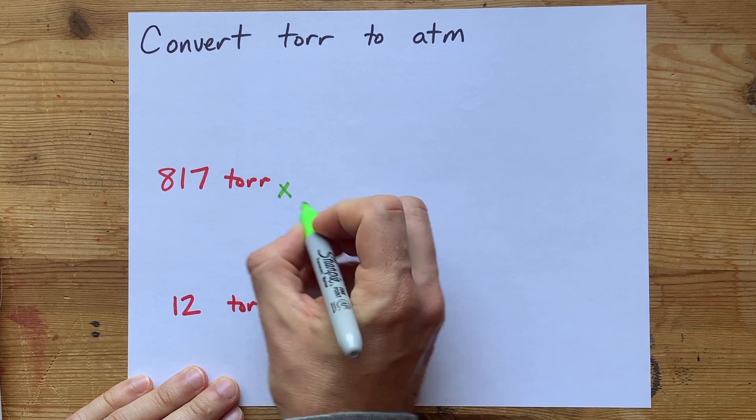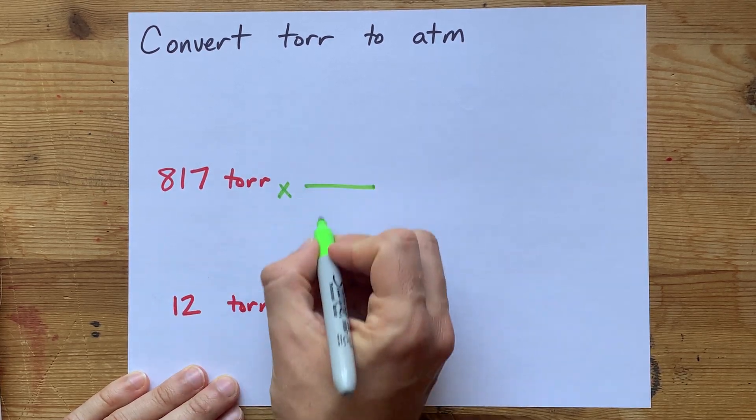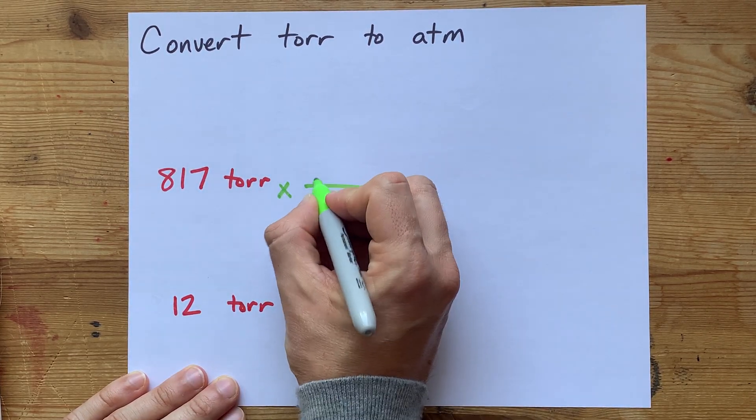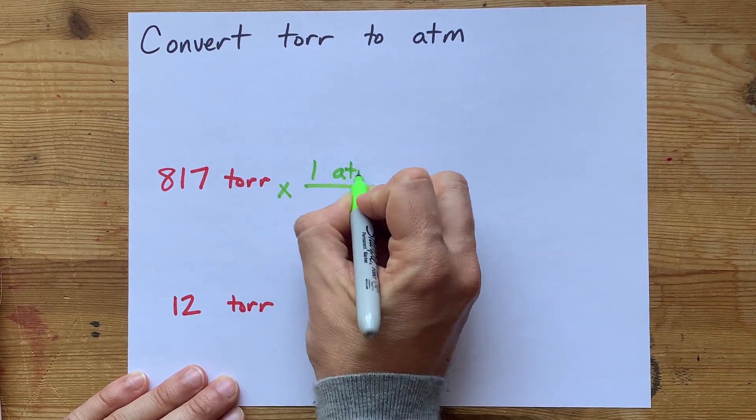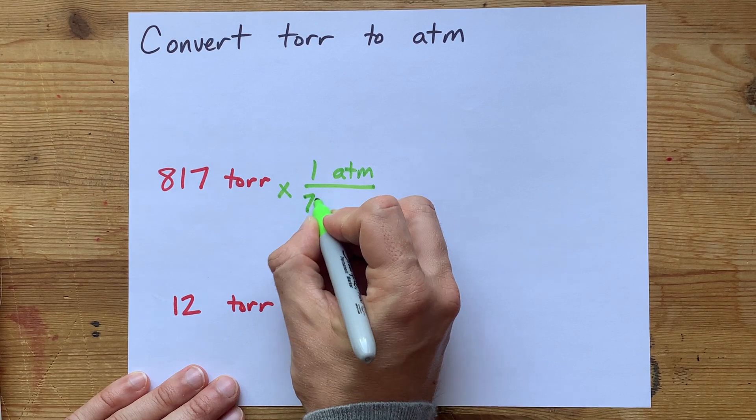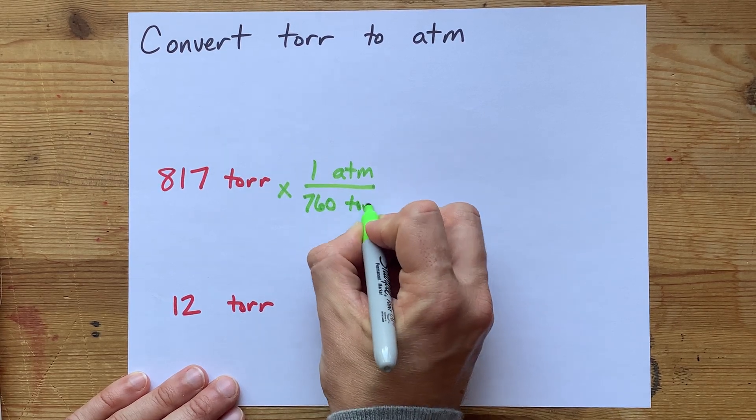The reason is that you can multiply this by a conversion unit where the top and bottom represent the same pressure.